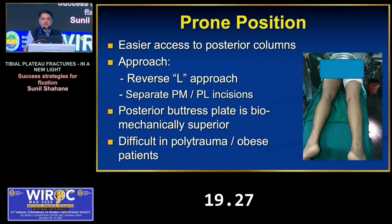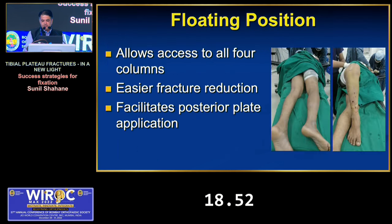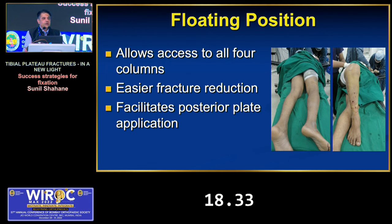In prone position, a posterior plate with posterior-to-anterior screws is biomechanically stronger. The trouble is if there is an associated anterior fracture for which there is no access in prone — requiring a staged approach, finishing the posterior job first then turning the patient. Any malalignment in the posterior fixation will interfere with anterior fracture reduction. For combined anterior and posterior fractures, the preferred choice of positioning is the floppy lateral or floating position, which allows going front and back, accessing all four columns simultaneously.